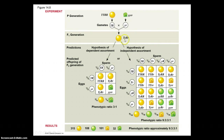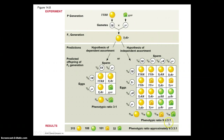Here's what he found. He took a round and yellow seed and crossed it with a green and wrinkled seed. If you look at the cross, there's a phenotypic ratio of 3 to 1 when looking at just one trait. This is what would be true if the traits were sorted together — if Y was attached to R. However, if these alleles sorted independently, you get what you see on the right-hand side, which gives a phenotypic ratio of 9 to 3 to 3 to 1.